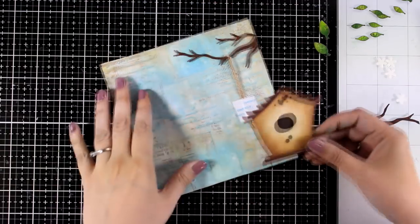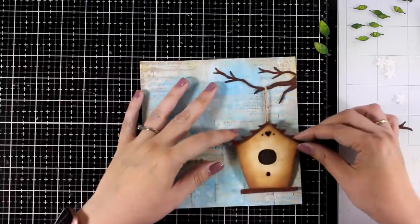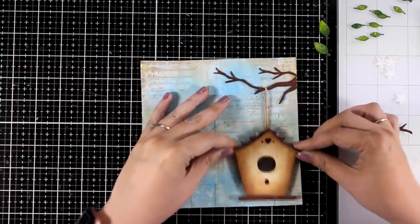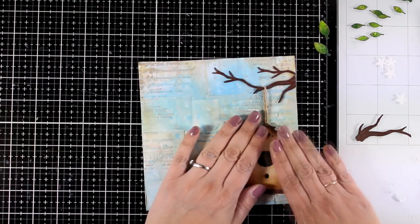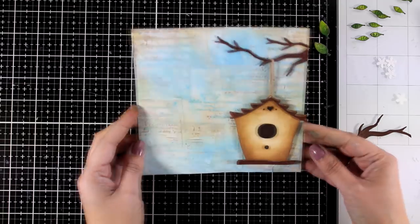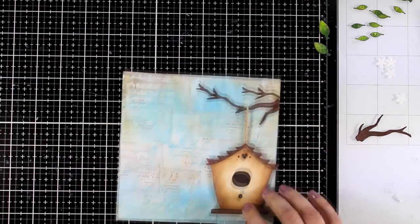I did add foam tape at the back with a little bit of a channel at the middle so that the twine fits in between, and I definitely wasn't shy with dimension. I did add two layers of foam tape back there so that I have enough dimension.